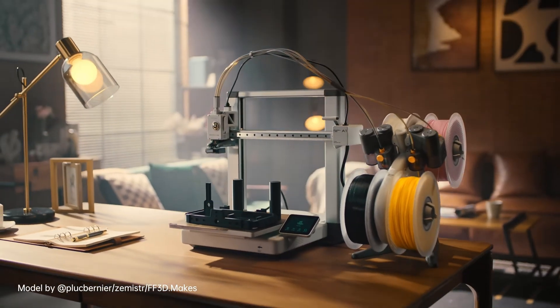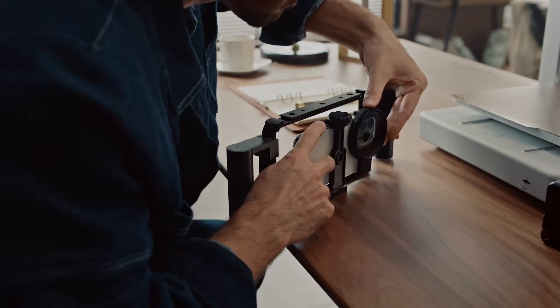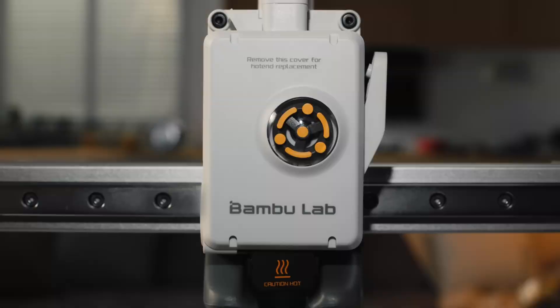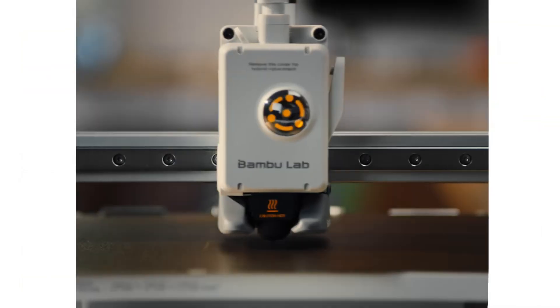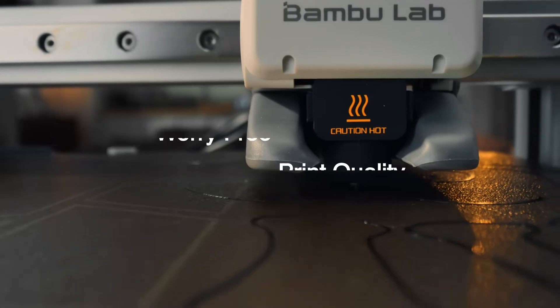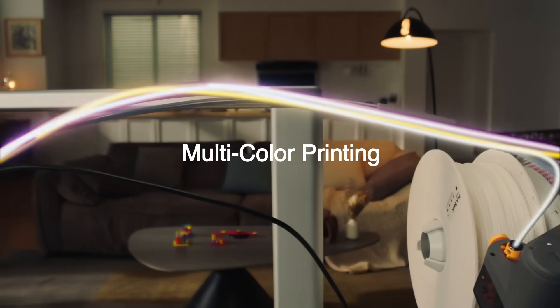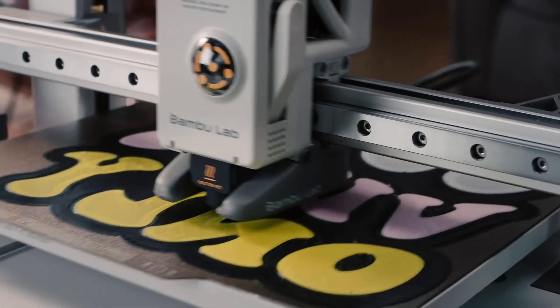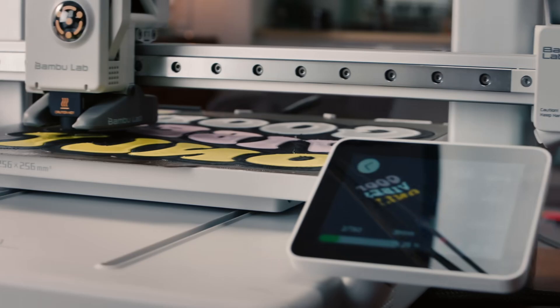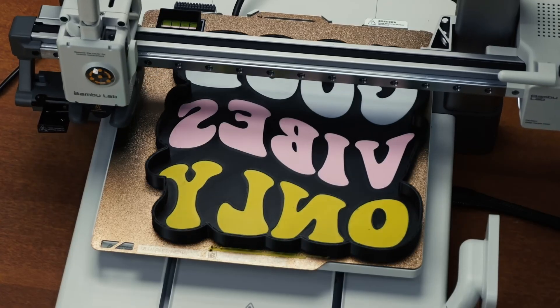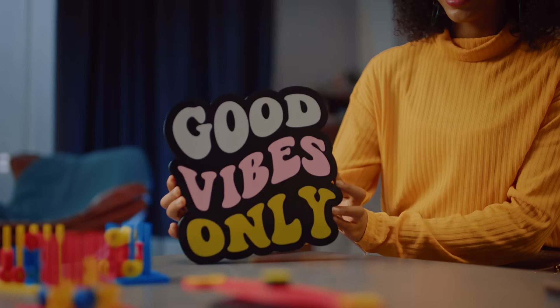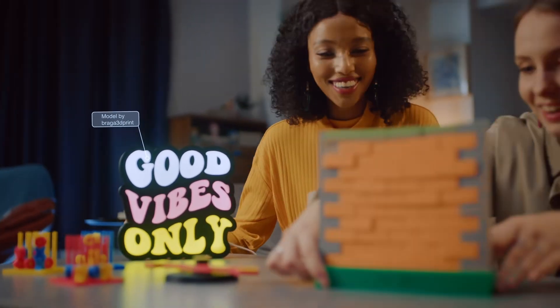Active flow rate compensation ensures your prints are consistently smooth. The printer's algorithm adjusts the flow rate for precise extrusion, providing flawless results. With its user-friendly interface, touchscreen and one-clip quick-swap nozzle, maintenance is a breeze. Plus, active motor noise canceling provides a quiet environment, letting you focus on your work while the A1 brings your ideas to life.